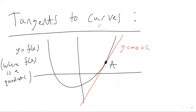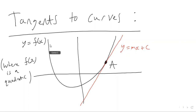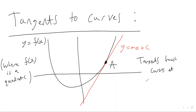In today's video we're going to look at tangent lines to curves. I've drawn a random example here — a quadratic curve y equals f of x and a straight line y equals mx plus c tangent at the point A. A tangent line touches a curve at a particular point — that's what a tangent line is, just a straight line that touches a curve at a particular point.